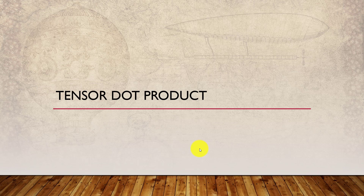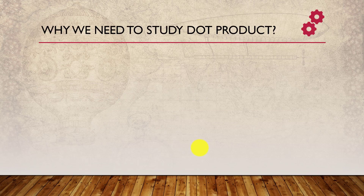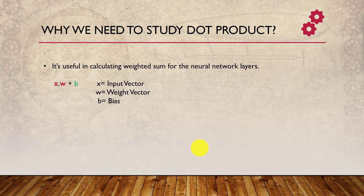First we will try to understand why tensor dot product is needed. Tensor dot product is very useful when we calculate the weighted sum of the neural network layers. If you remember the term xw + b, where x is the input vector, w is the weight vector, and b is the bias — here we are basically taking the dot product of x and w.